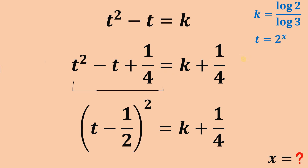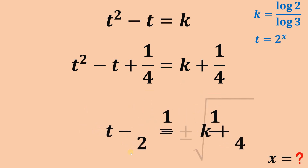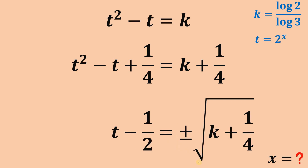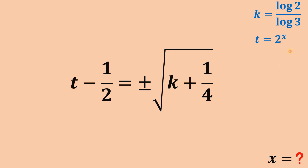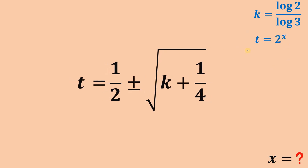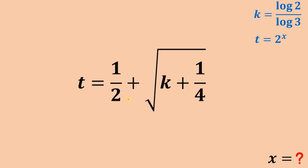We can factor this as t minus 1 half, raised to the power of 2. So we can now solve for t. The right-hand side is k plus 1 over 4. Next, take the square root of both sides, giving t minus 1 half equals positive or negative square root of k plus 1 over 4. Now, since t equals 2 raised to the power of x and 2 raised to the power of x is always greater than 0, we cannot accept the negative value. Therefore, t equals 1 half plus square root of k plus 1 over 4.